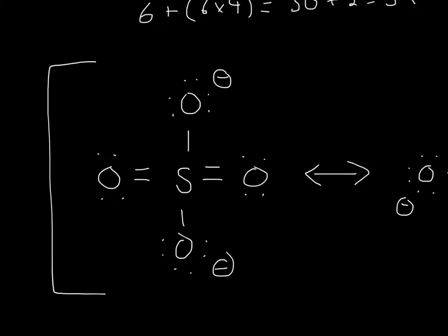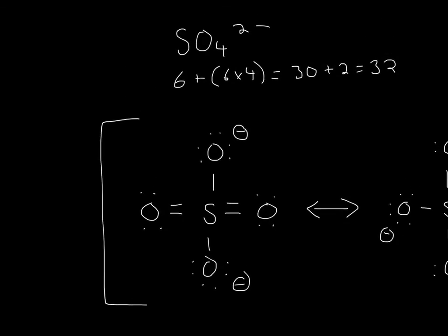You always put the least electronegative atom in the middle, then surround it with oxygens, and then you can count them up and it will equal 32.